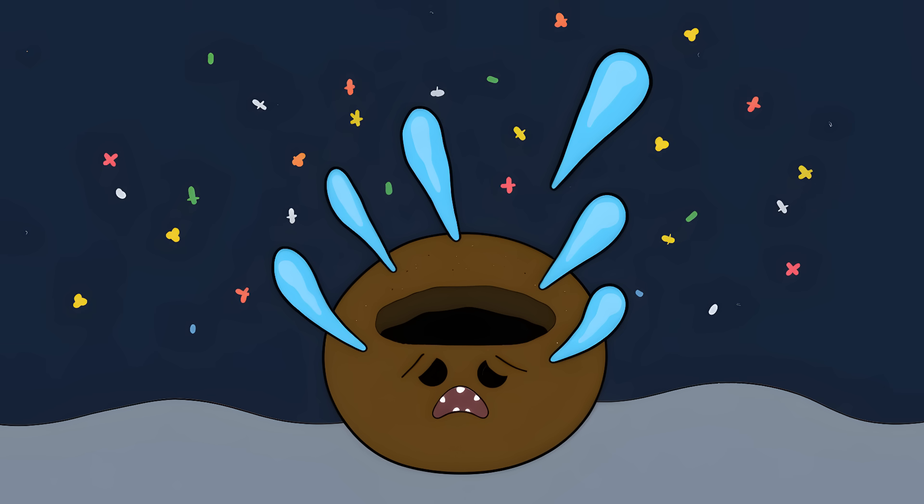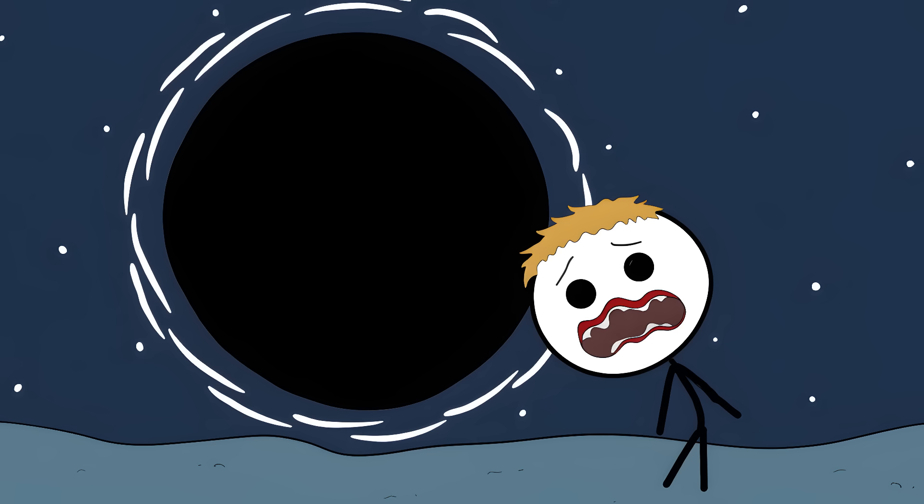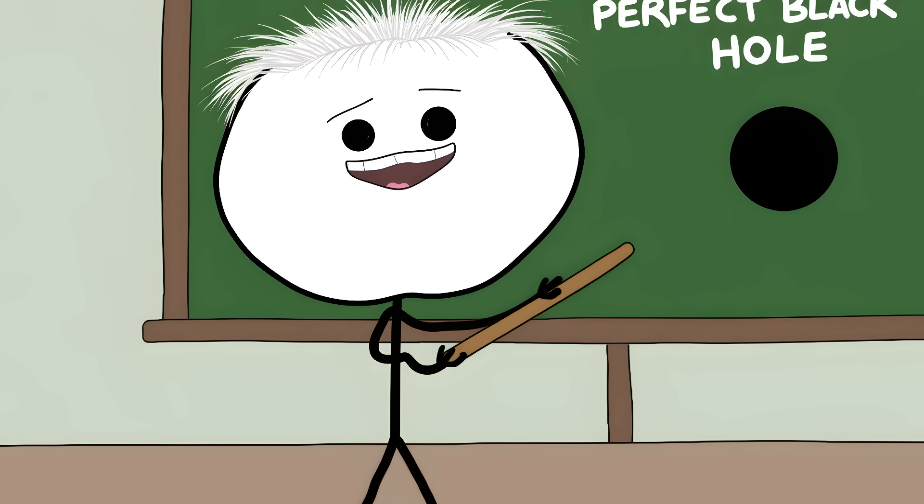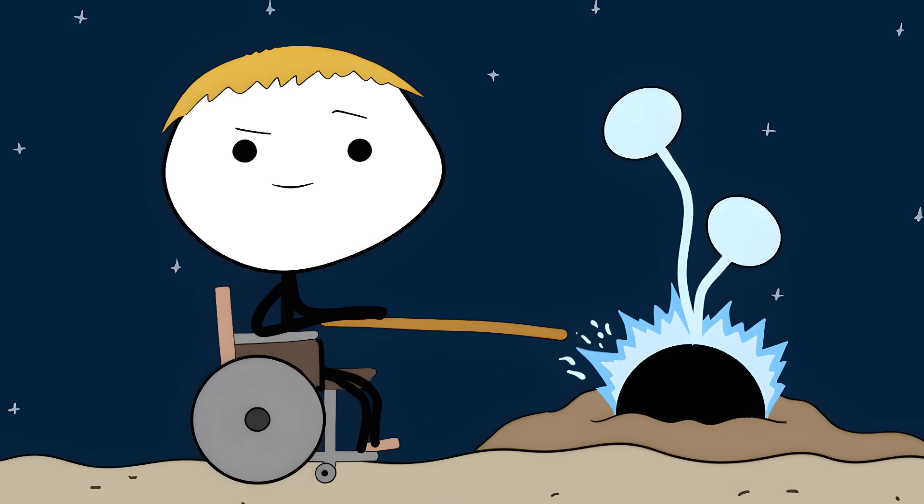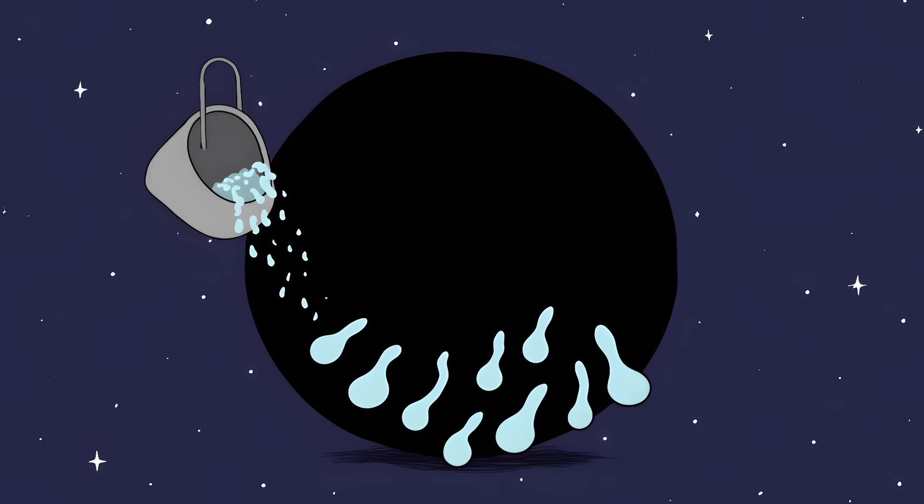Number 3. The Leaky Black Hole. Imagine the most powerful thing in the universe. A cosmic vacuum cleaner so strong that even light can't escape. That's a black hole. And scientists thought they had it all figured out. But then Stephen Hawking came along and discovered that black holes leak.